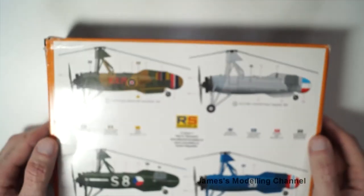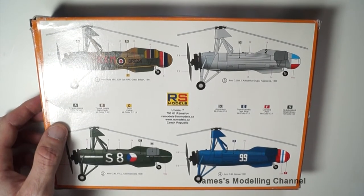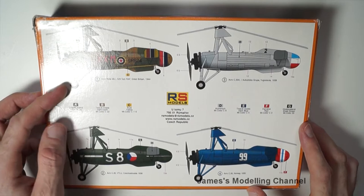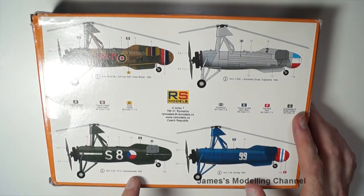On the back are the color schemes. You get four options: one's Great Britain, Yugoslavia, Czechoslovakia, and Norway.